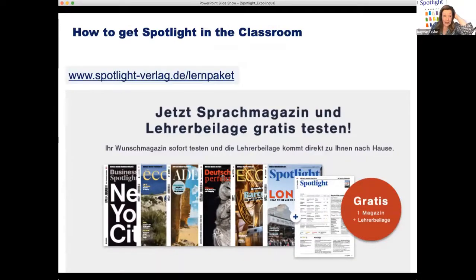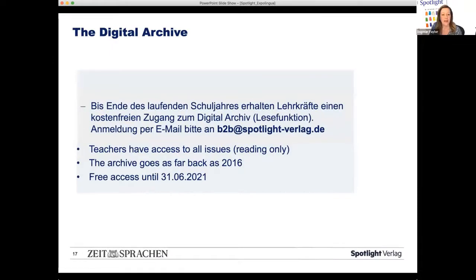So how to get Spotlight in the Classroom? Basically, you can get it here. If you go to spotlightmenusverlag.de oblique learn packet, there's lots of information about how to get it there. So you subscribe to the magazine as a teacher and then you get the supplement for free. You can see we've got a special offer there. Gratis. One magazine and one supplement for free to try out. And then if you want to have access to the digital archive, that's also a fantastic thing. You can see there in German it says, so up until the end of this current school year, you can get free access to the digital archive. You have read-only access. The archive goes as far back as 2016. So there are loads and loads of magazines and texts in there for you. And the free access is until the 31st of June. So there's perhaps an offer for you that you shouldn't miss. There you go.